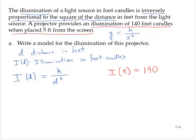So then I(d), if d is 5, then we get 140 is equal to k over 5 squared. So then 140 is equal to k over 25, and multiplying through by 25...